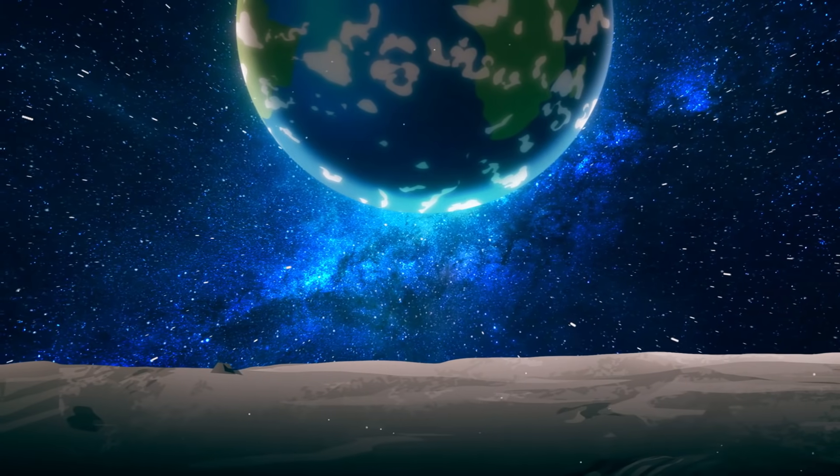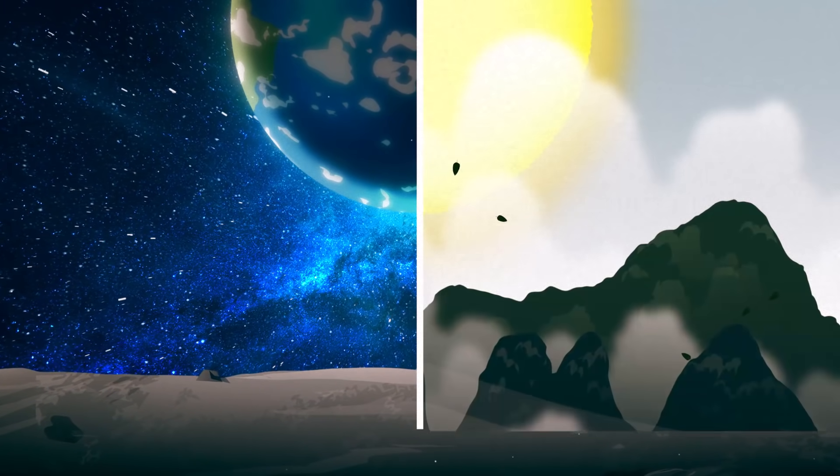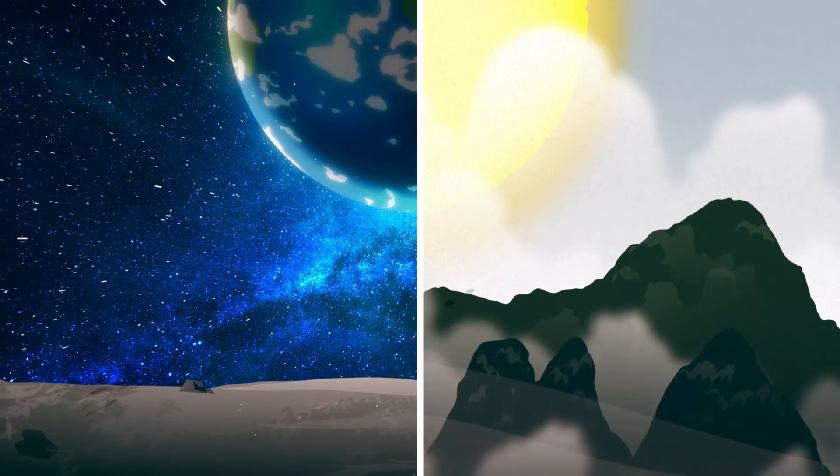The moon's exosphere remains razor thin because it lacks the gaseous density of Earth's atmosphere. If we're going to thicken the moon's exosphere, we're going to need more gas.